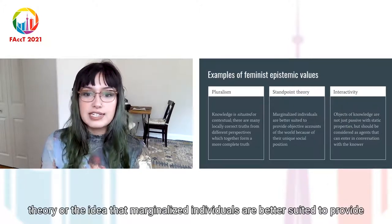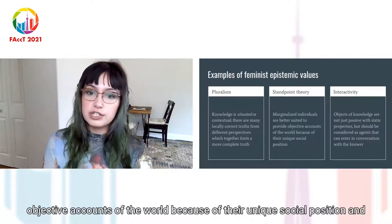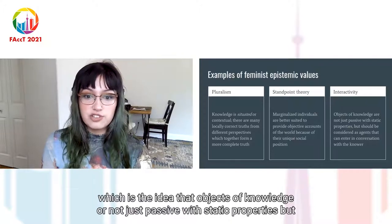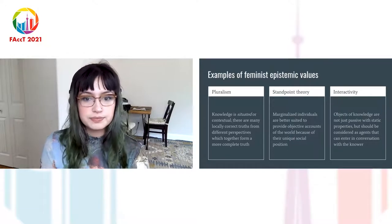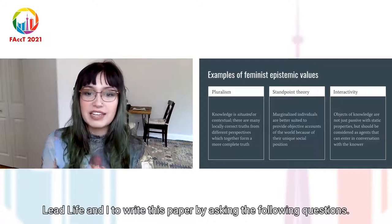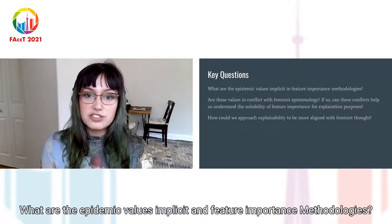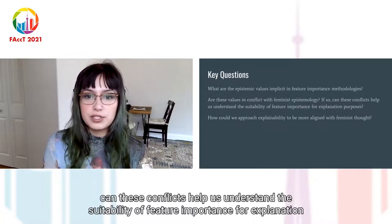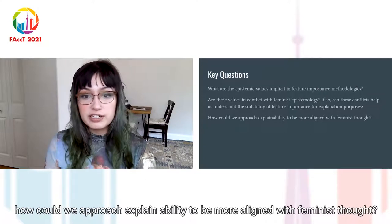Another feminist epistemic value is standpoint theory, or the idea that marginalized individuals are better suited to provide objective accounts of the world because of their unique social position. Another is interactivity, the idea that objects of knowledge are not just passive with static properties, but should be considered as agents that can enter into conversation with the knower. Keeping these values in mind led Leif and I to ask: What are the epistemic values implicit in feature importance methodologies? Are these values in conflict with feminist epistemology? If so, can these conflicts help us understand the suitability of feature importance for explanation purposes? And how could we approach explainability to be more aligned with feminist thought?